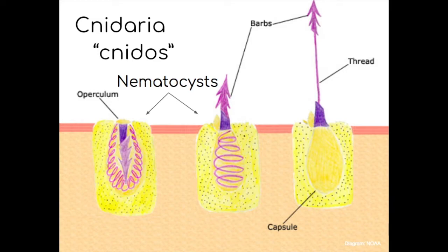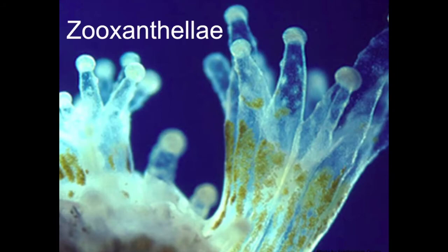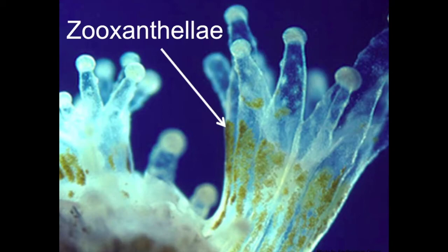Corals get about 10% of their energy from capturing prey this way — so how do they get the rest? Zooxanthellae! Here you can see a picture of individual coral polyps whose tentacles actually look clear, with brownish parts inside. Those brownish parts are the zooxanthellae. Zooxanthellae are a type of algae, similar to a plant, and they have a mutualistic relationship with the coral. They can photosynthesize, meaning they create energy using light from the sun. Corals get 90% of their food from their zooxanthellae, and that energy is transferred to the host coral tissue.